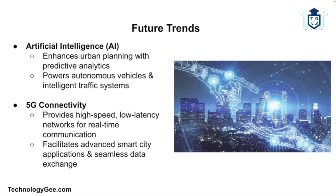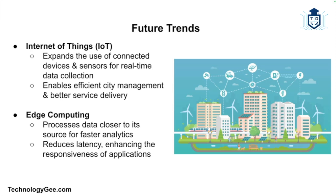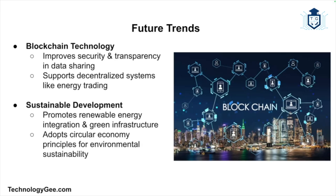The future of smart cities is shaped by several emerging trends. Artificial intelligence will play a critical role from predictive analytics for urban planning to autonomous vehicles and intelligent traffic management. The deployment of 5G networks will provide the high-speed, low-latency connectivity needed for advanced smart city applications, enabling real-time data exchange. IoT will continue to expand with more connected devices and sensors for efficient city management. Edge computing will enable faster data processing at the network edge, reducing latency and improving the responsiveness of smart city applications.